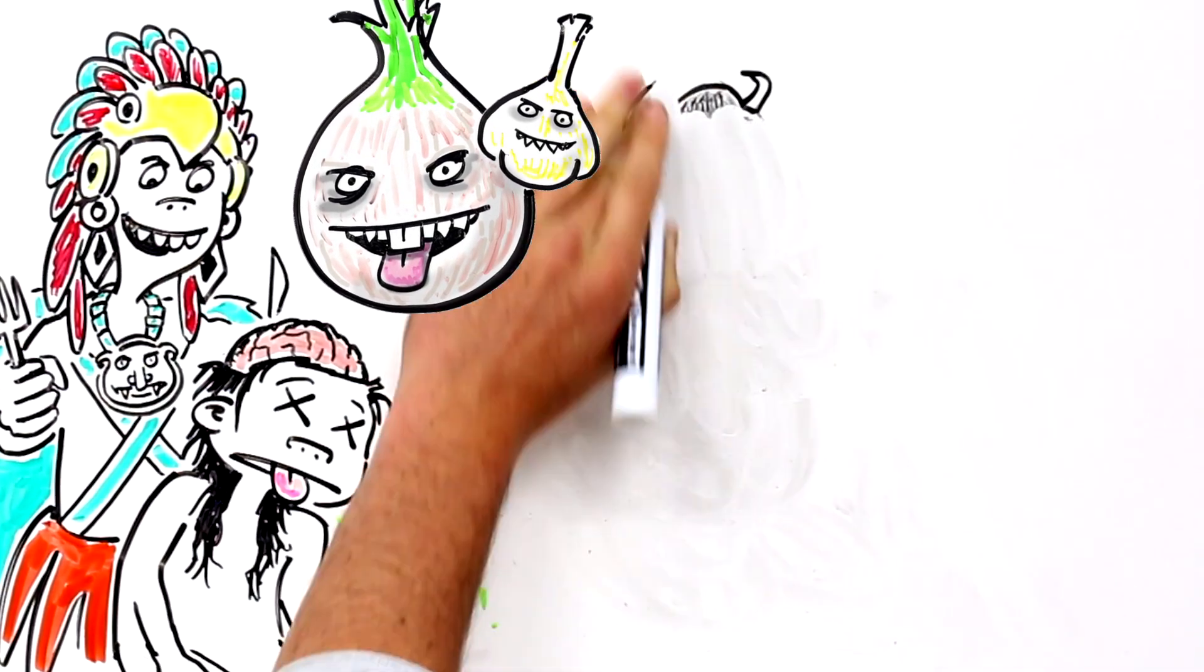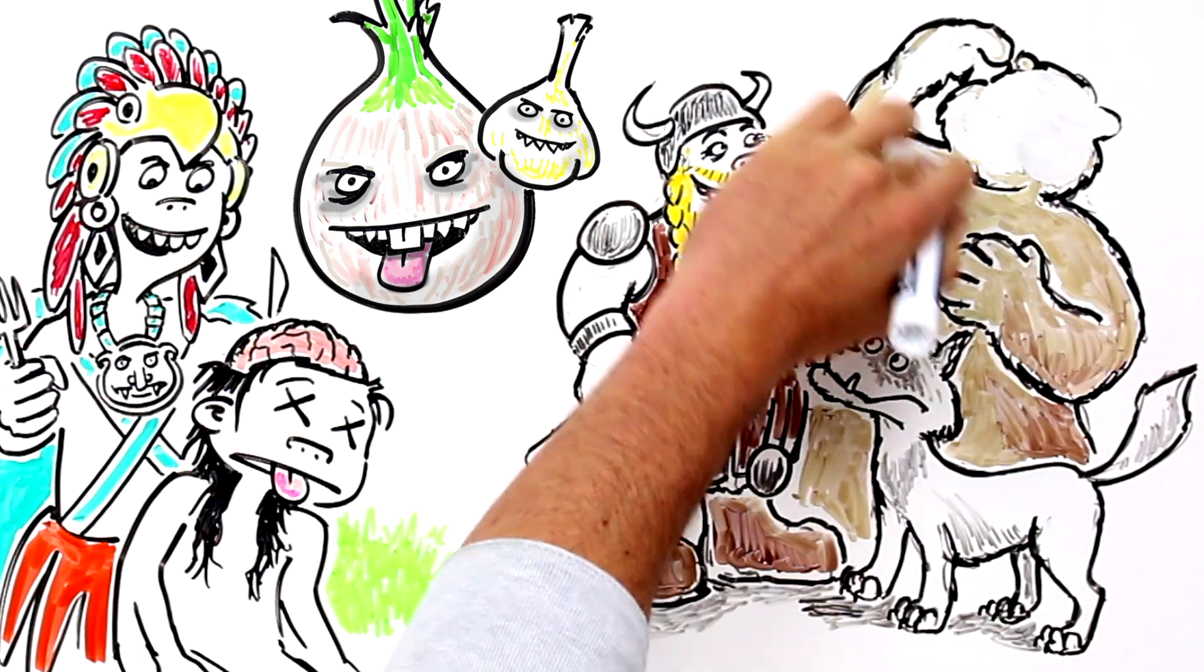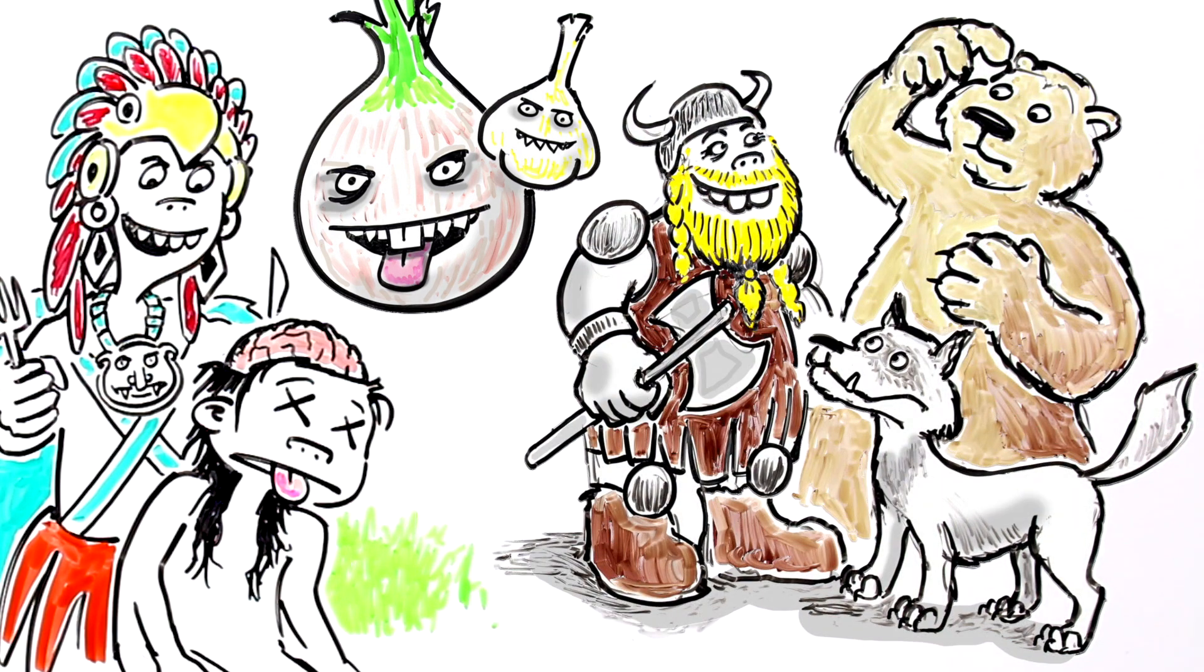The Nordic Vikings believed that drinking the blood of a bear or wolf before battle gave them the ferocity of the animal they drank.